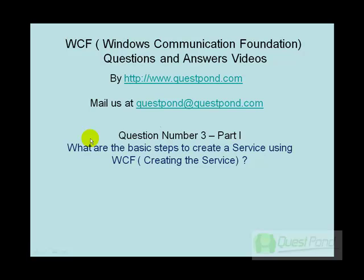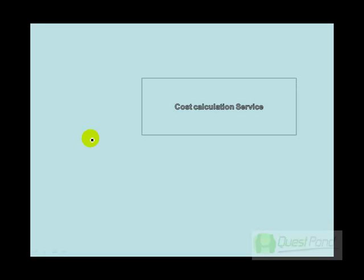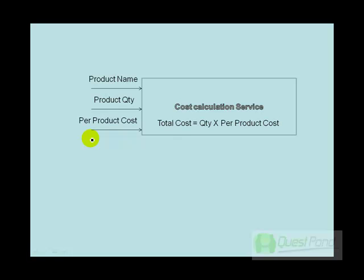Taking up Part 1: creating the service. We are going to build a small cost calculation service. It takes a product name, product quantity, and product cost, then multiplies the quantity with the per-product cost to give the total cost. This is the service we would like to build using WCF. In the next part, we will consume the service using an ASPX client.